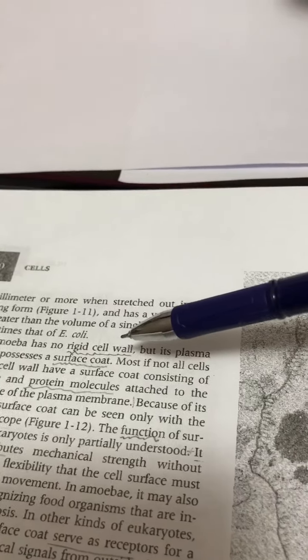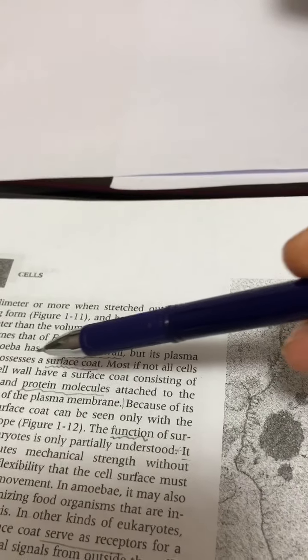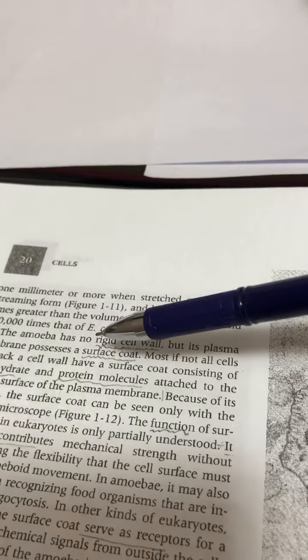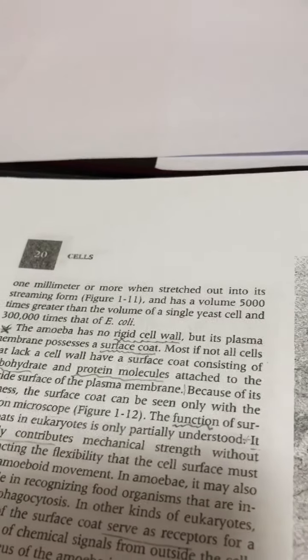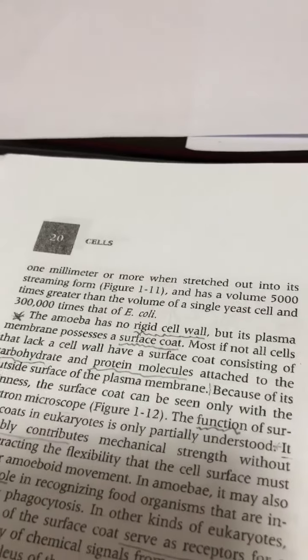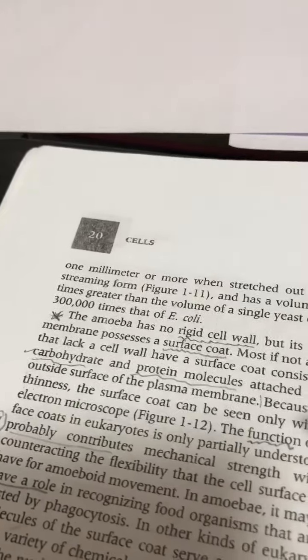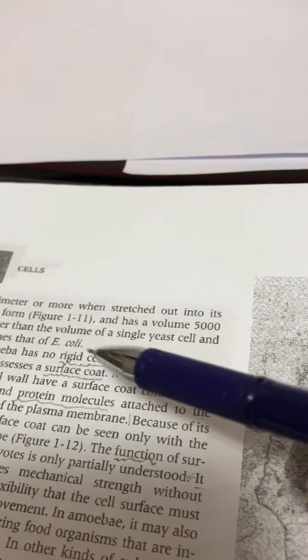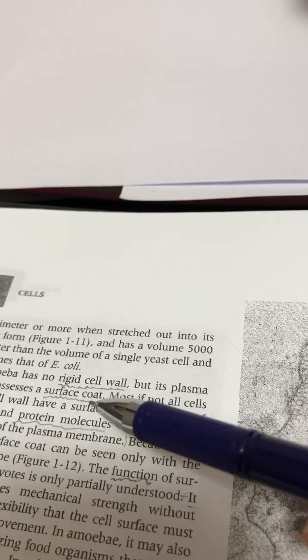The amoeba has no rigid cell wall. So instead of the rigid cell wall, there is the surface coat. The surface coat is present in most types of cells which lack the rigid cell wall.